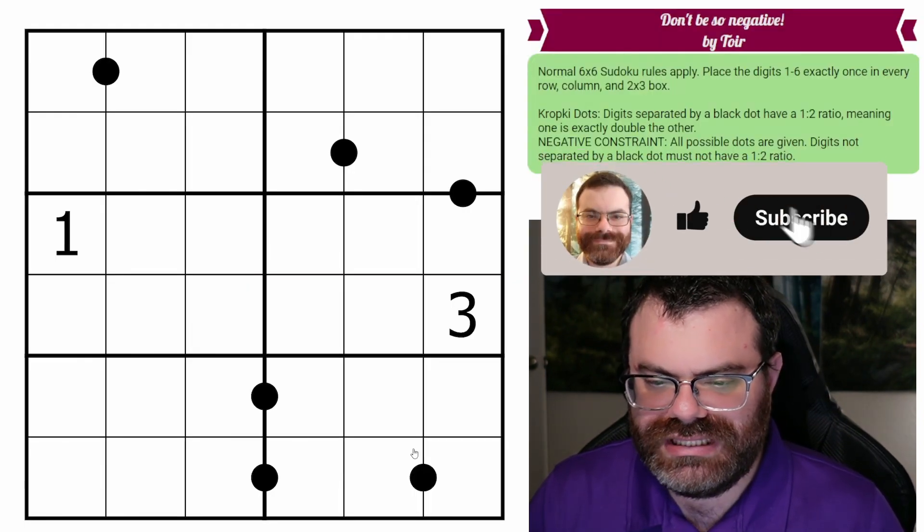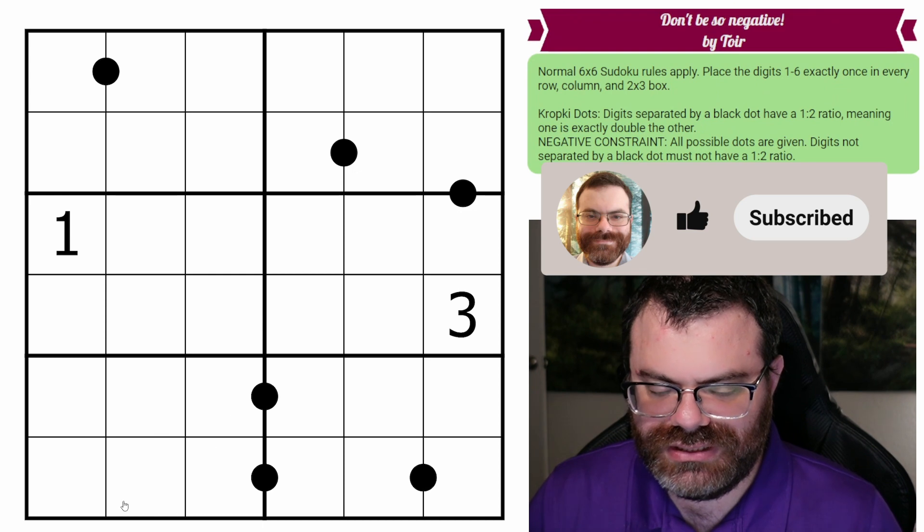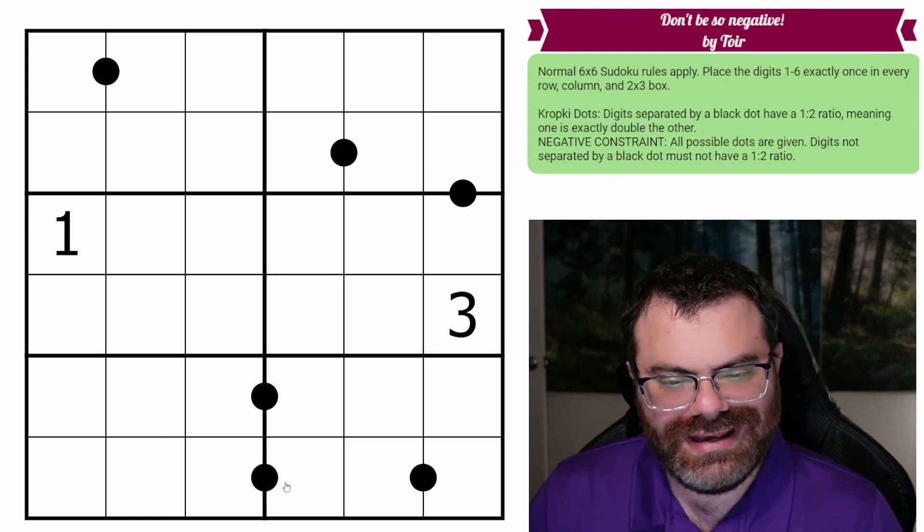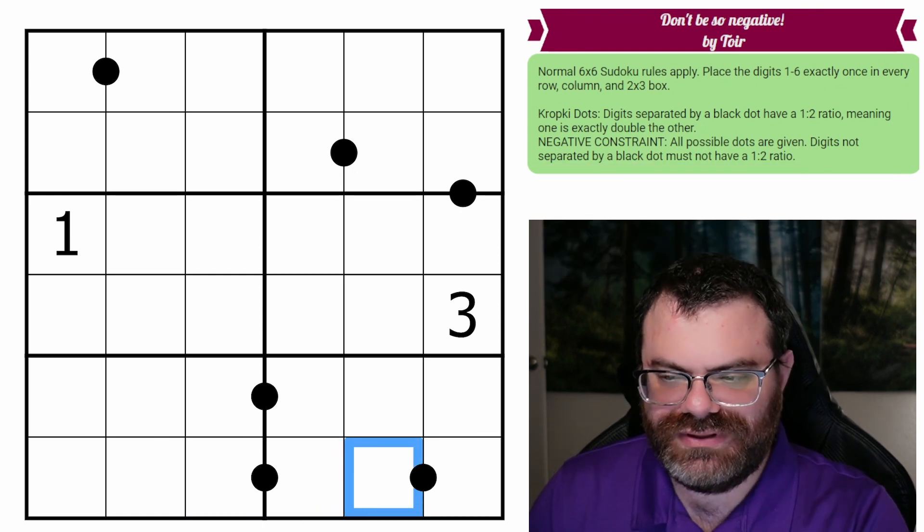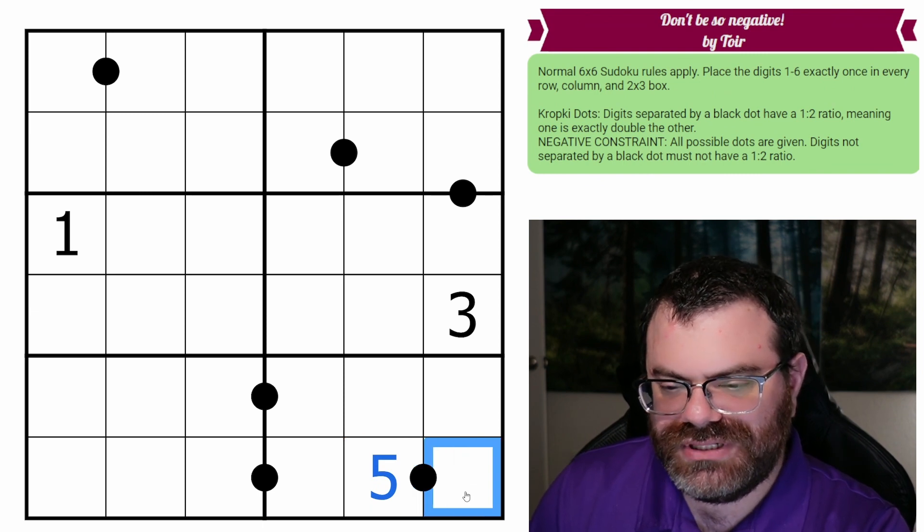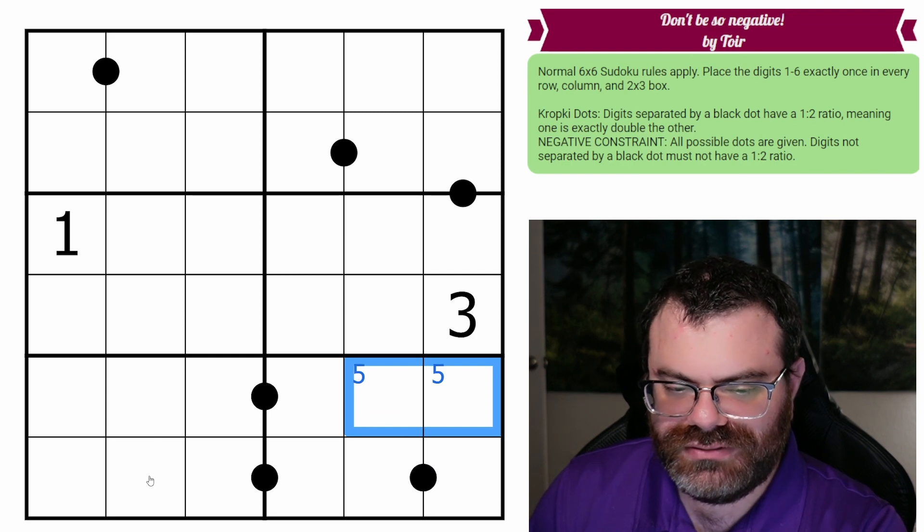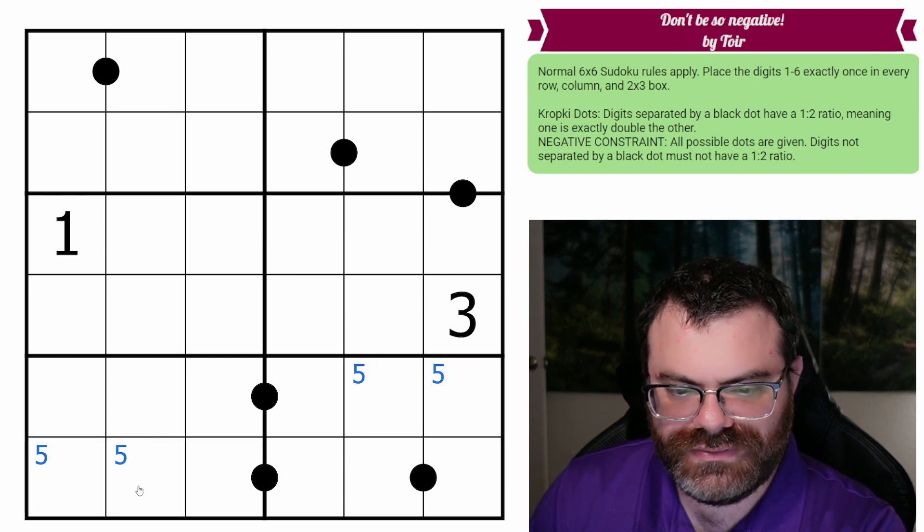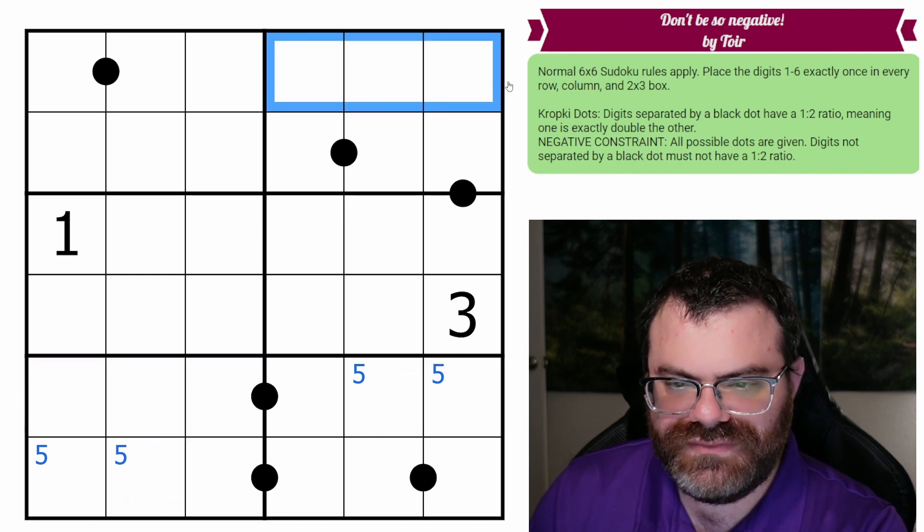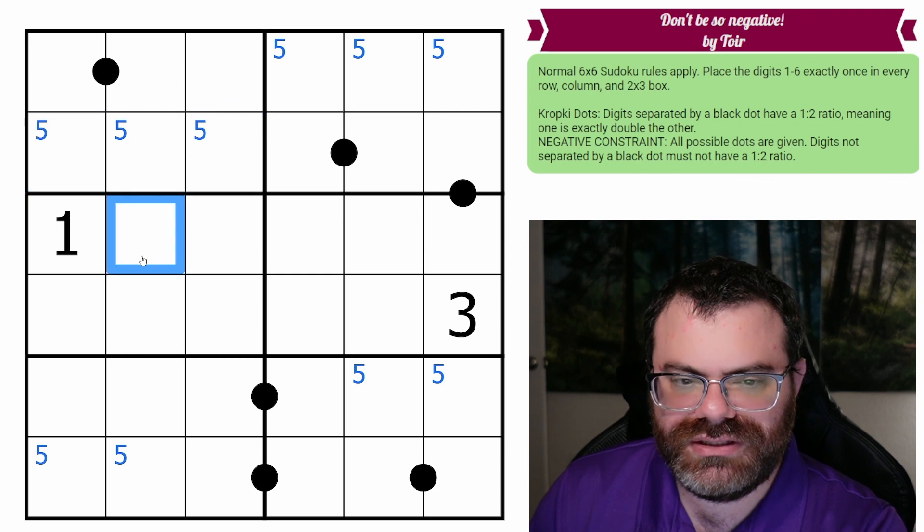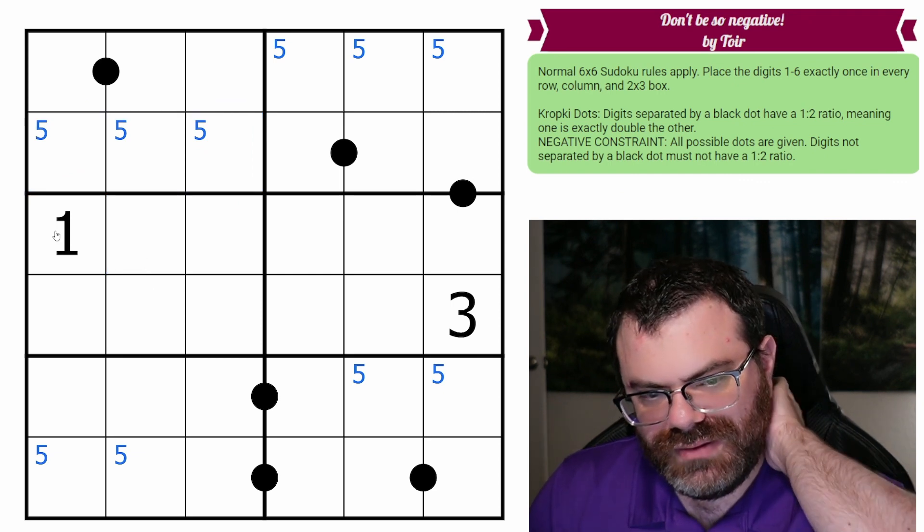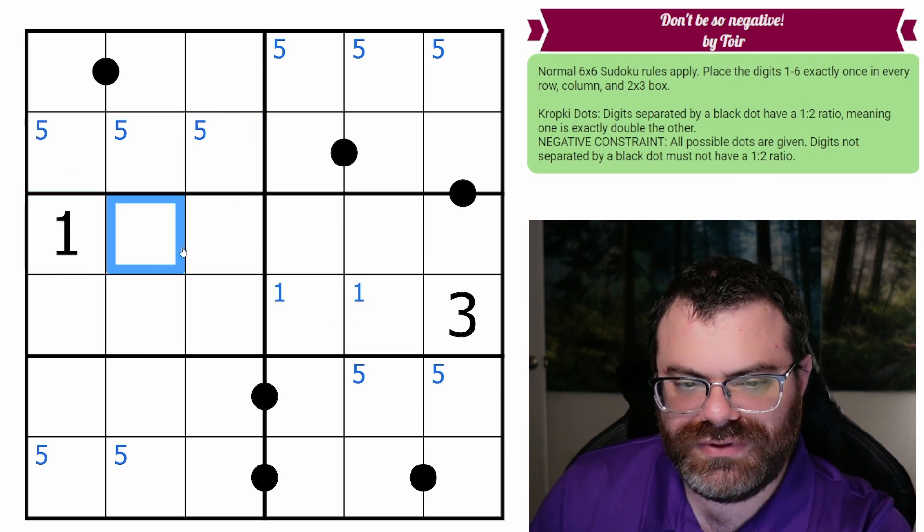All right, I think one easy way to get started is to look for fives, because fives can't go on black dots. If this was a five, this would either be two and a half or 10, neither of which are allowed. So five in this box goes here, five in this box goes here. Five in this box goes up here, so then it goes down here. I guess we have a one down here, and we have a three up here.